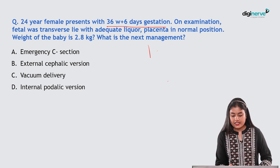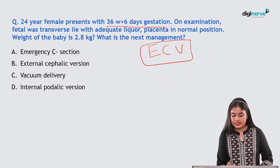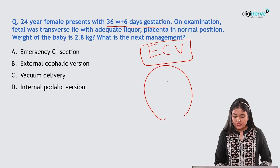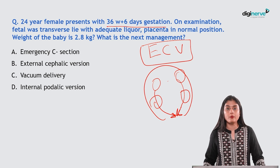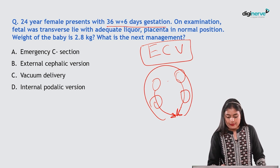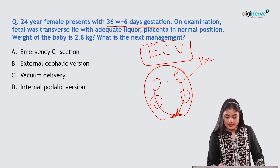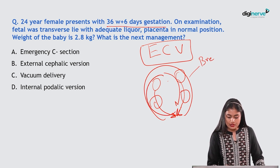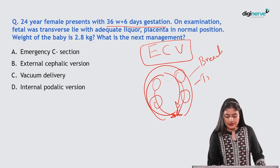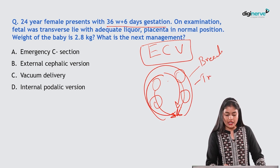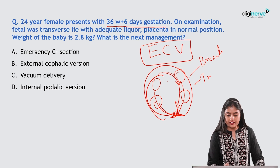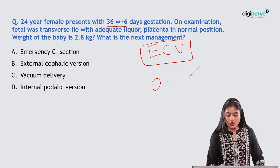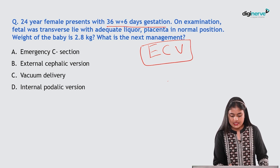Rather than proceeding directly to cesarean section, the preferred option is external cephalic version (ECV). ECV means bringing the fetal head down to the lower pole. It is easier in transverse lie because half the rotation is already completed. It is indicated for breech or transverse lie presentations.